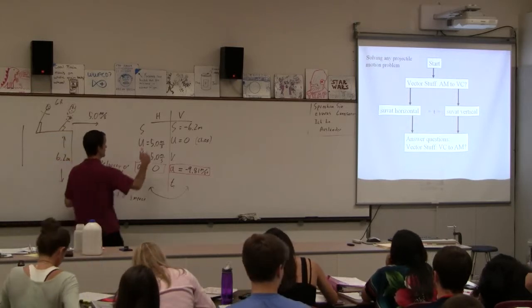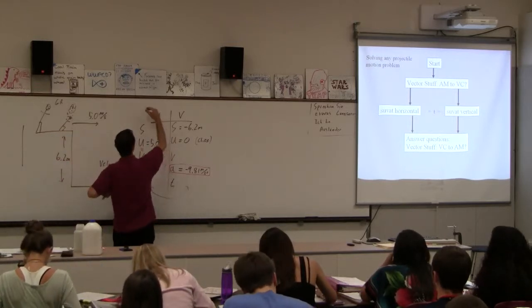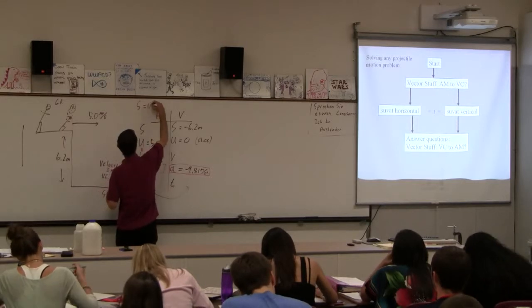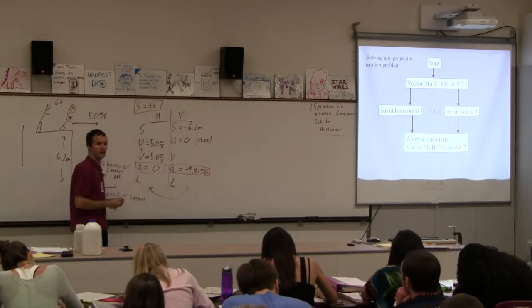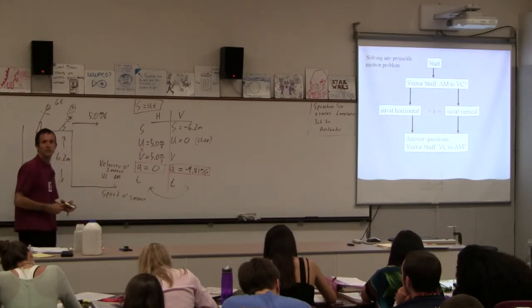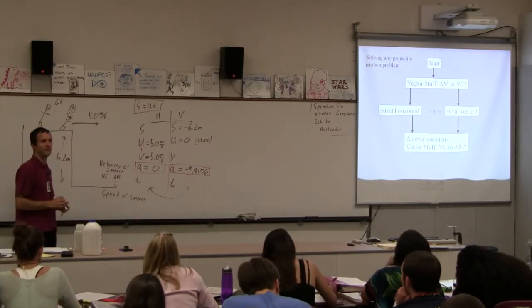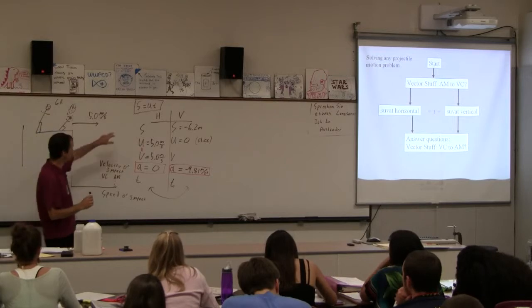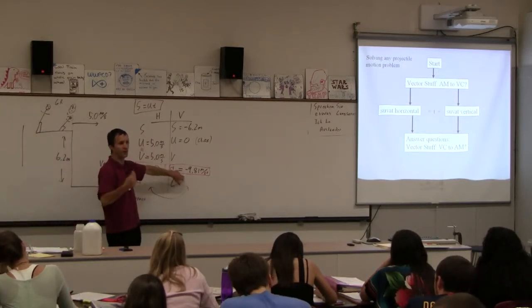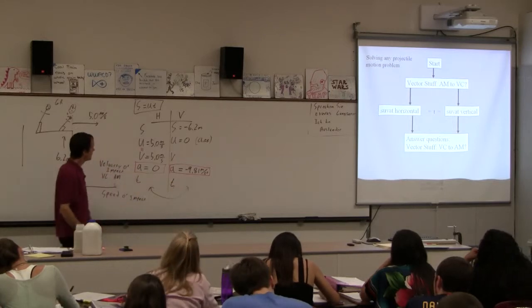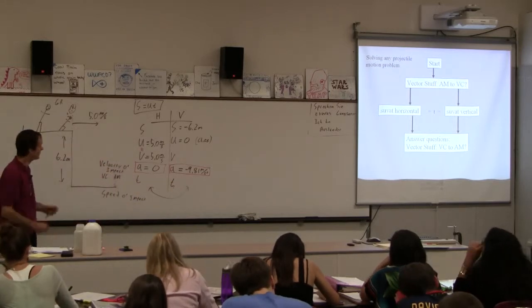All right. Now, and then the other thing that we all, the only thing we do horizontally is we use S equals UT. Why isn't there a one-half AT squared on that side? Is it because A is zero? Yeah. So all we're going to do is just S is UT on this side, right? Over here, though, we do have an acceleration, so it's a full-fledged SUVAT type of thing, right? Okay. And that's why we studied how to do those, right?